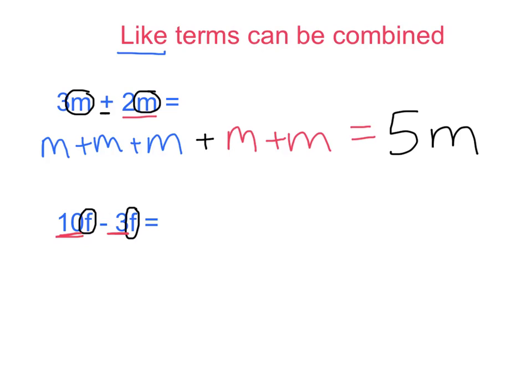So I will show you both ways for that. So first I know that I have 1, 2, 3, 4, 5, 6, 7, 8, 9, 10f's. And if I'm subtracting 3f's, I could just cross out 1, 2, 3 of them and I know that I'm left with 1, 2, 3, 4, 5, 6, 7f's total.